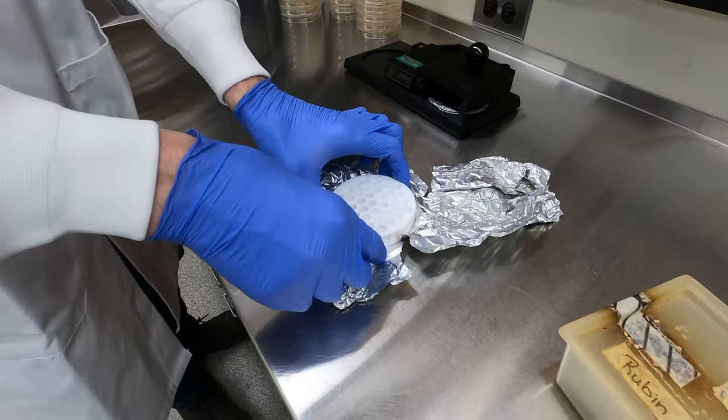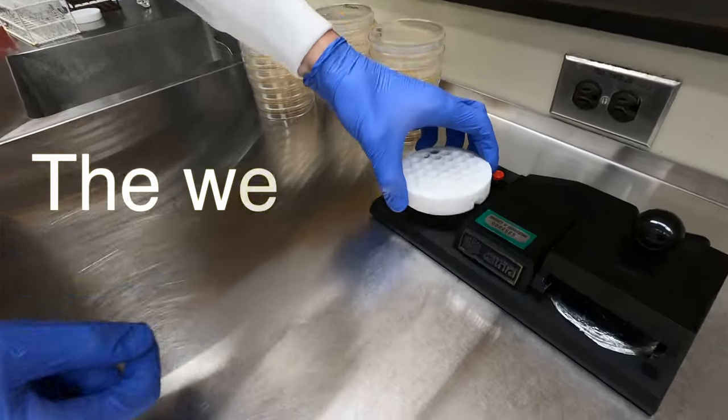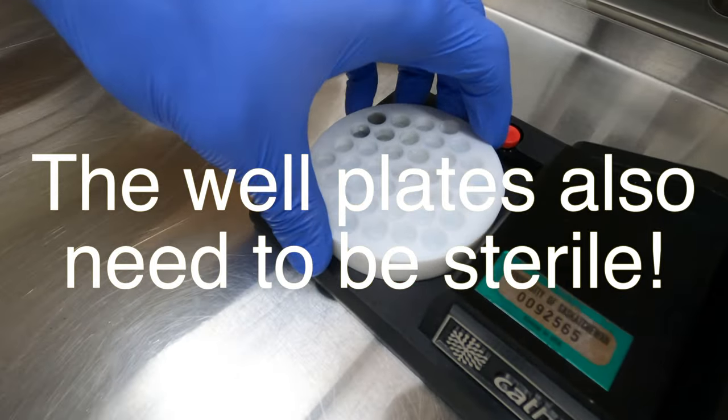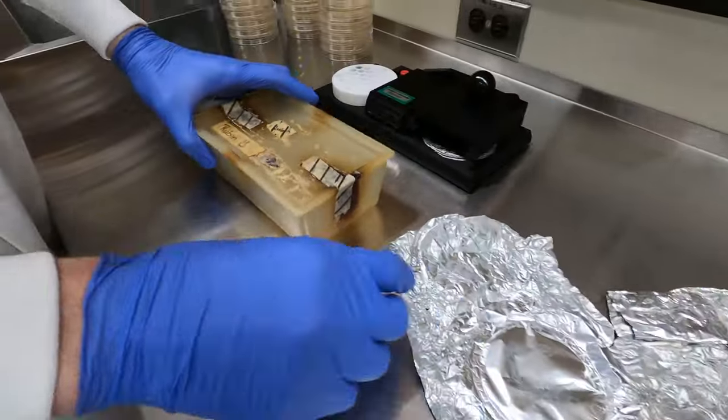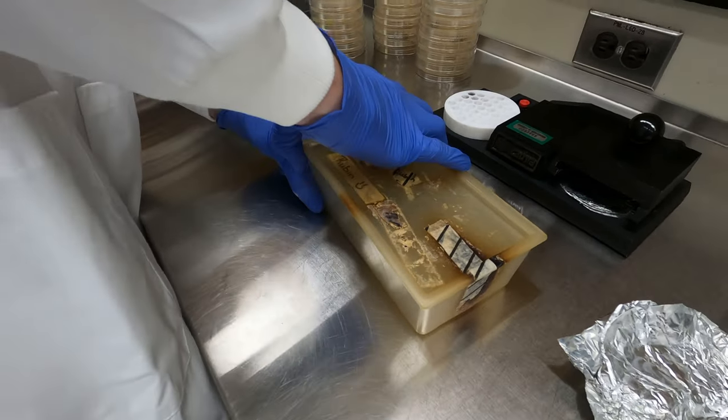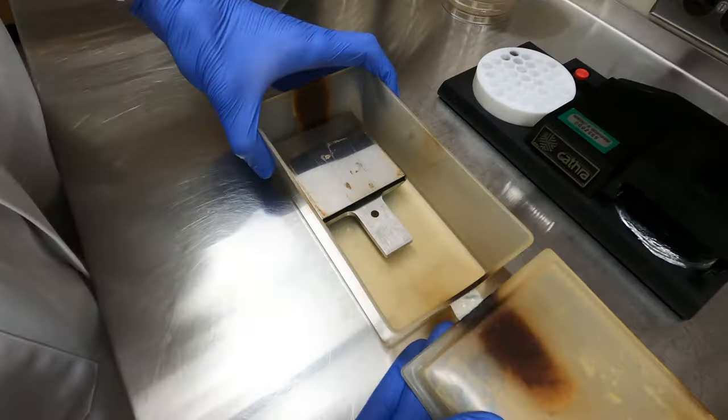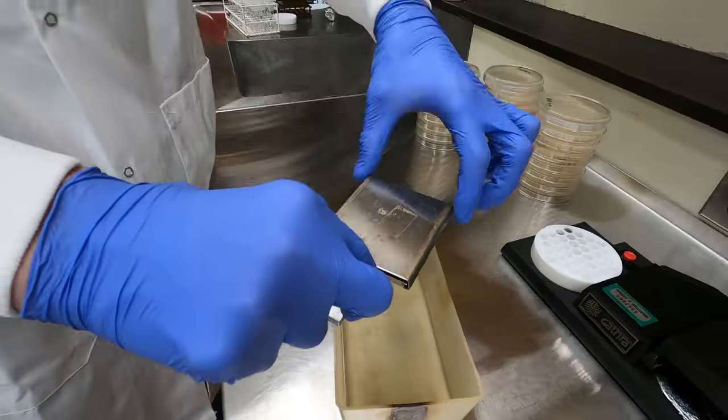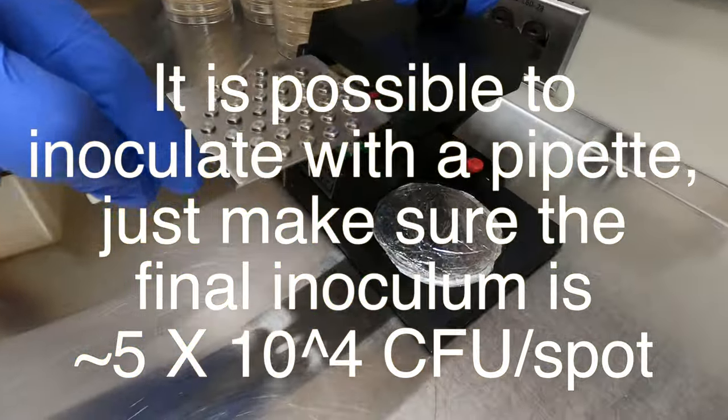We transfer our well plate to the replicator device, and we're now ready for our autoclaved stainless steel pin plate. These stainless steel pins are calibrated such that they deliver exactly 0.1 microliters of our McFarlane 0.5 suspension, giving us a final inoculum of 5 times 10 to the 4 colony forming units per spot, which is in accordance with the CLSI guidelines.